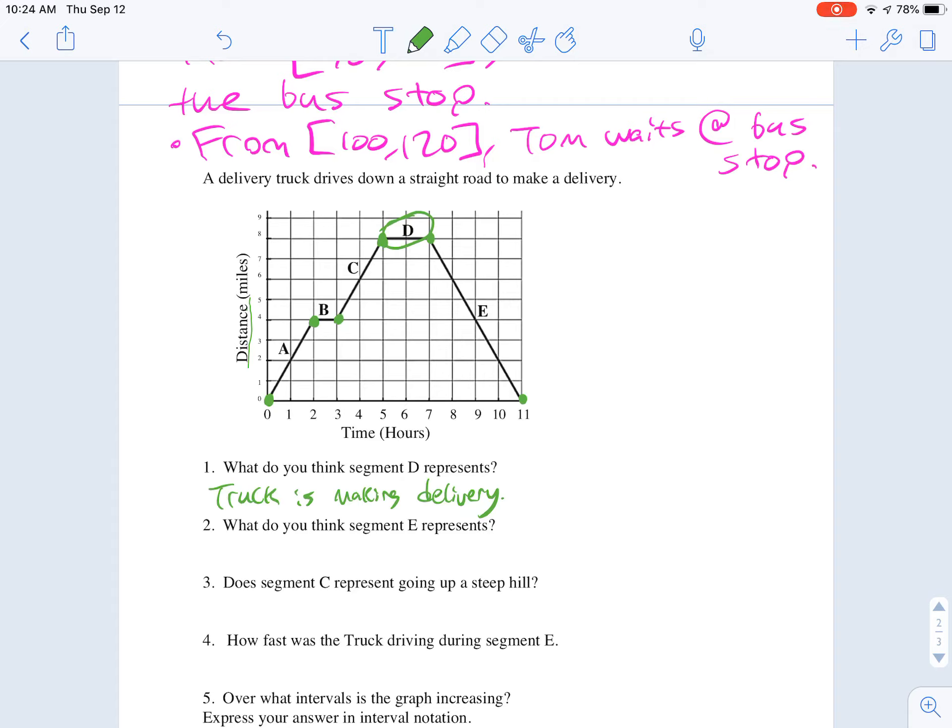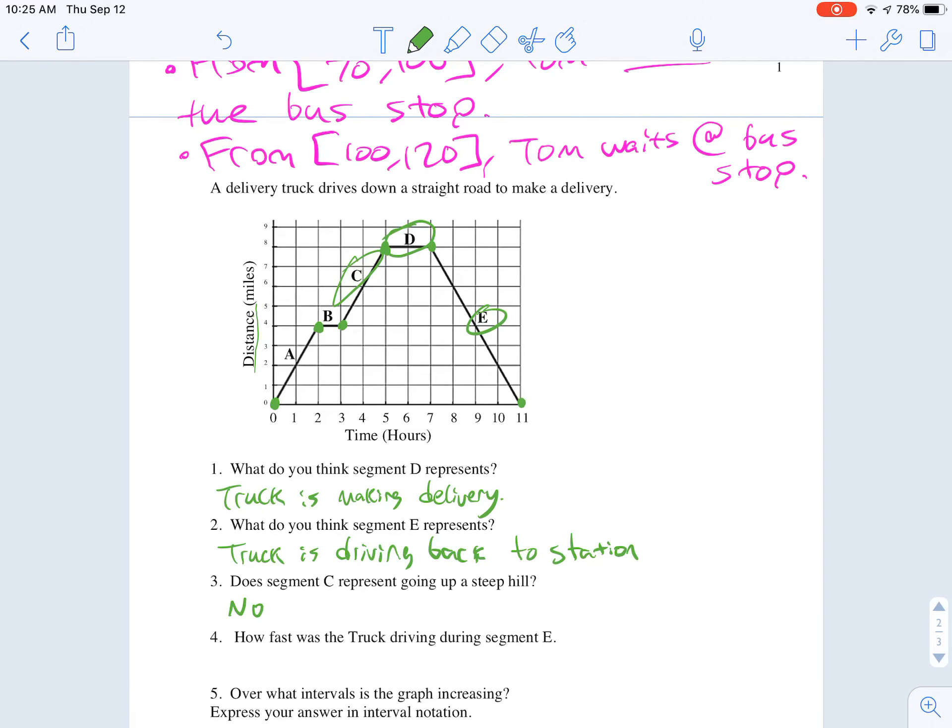Segment E, I would say that he's driving back to the station. The truck is driving back to station, wherever he started. Segment C. They ask, does segment C represent going up a steep hill? Well, not necessarily. Just because the graph is going up doesn't mean that the truck is changing its elevation. It just means that the truck is driving further away. As the distance from home increases, that's what's going on. As the distance from home increases, that means that the truck's just driving away. So no, this does not necessarily represent that. It doesn't mean he's not, but it definitely doesn't guarantee that he's going up a hill. No, it doesn't.